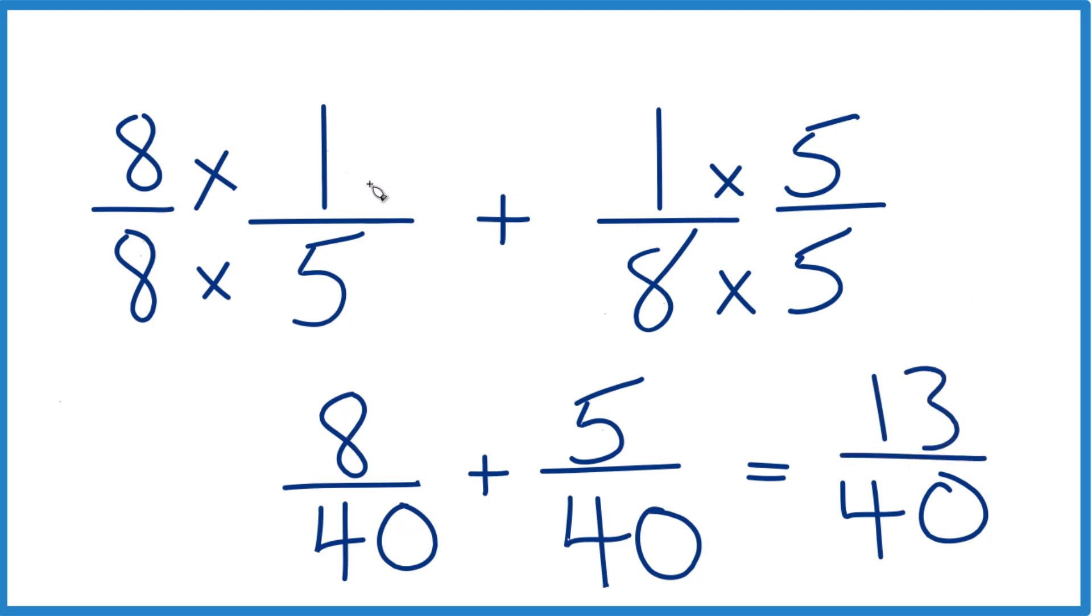So in answer to our question, 1 fifth plus 1 eighth, that's 13 fortieths. That's it. This is Dr. B, and thanks for watching.